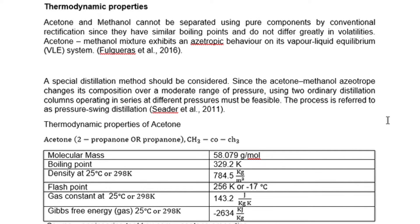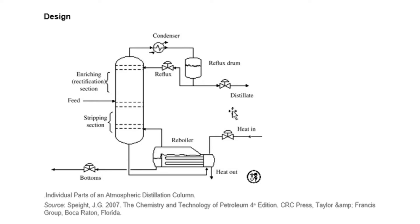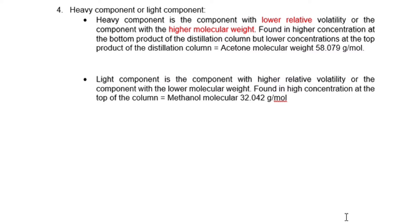It's also important to note the boiling point for each product and their flash points, since they are flammable. For the design we are going to use a distillation column, which typically consists of the column itself, the condenser, and the reboiler. In chemical engineering, a distillation column is a key component used for separation, but it can also be hazardous equipment if not well handled — it can be a cause of fire, explosion, or collapse. Acetone and methanol are both highly flammable and can ignite, causing a huge fire or explosion.